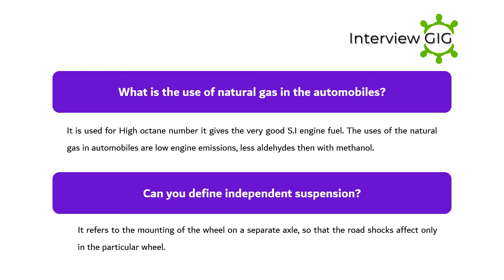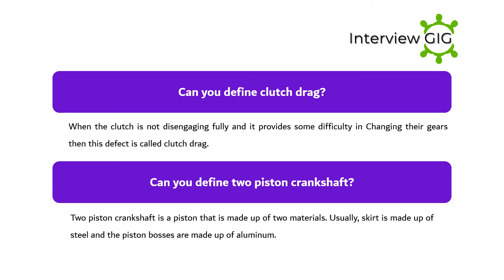Can you define independent suspension? It refers to the mounting of the wheel on a separate axle so that road shocks affect only that particular wheel. Can you define clutch drag? When the clutch is not disengaging fully and provides some difficulty in changing gears, this defect is called clutch drag.